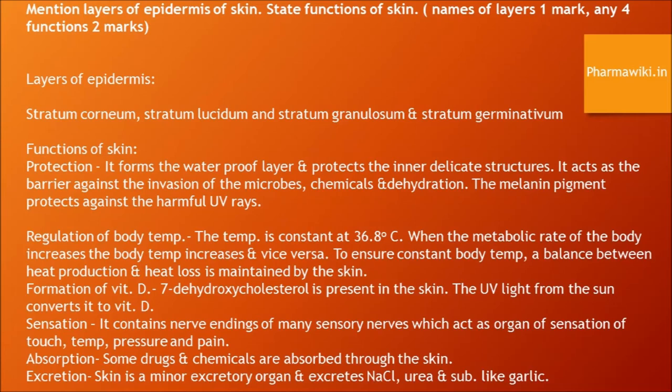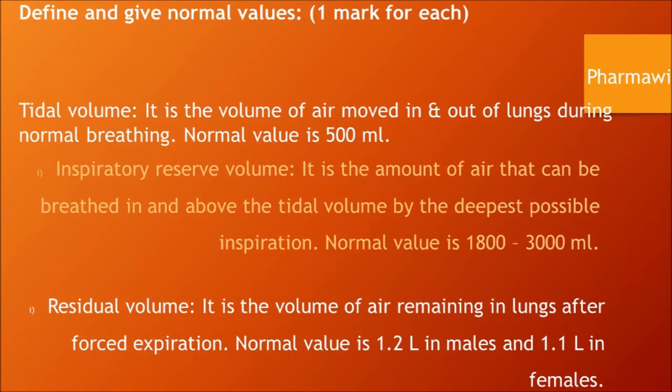Define and give normal values of lung volumes. Tidal volume: volume of air moved in and out of the lungs during normal breathing; normal value is around 500 ml. Inspiratory reserve volume: the amount of air that can be breathed in above the tidal volume by the deepest possible inspiration; normal value is 1800 to 3000 ml. Residual volume: the volume of air remaining in the lungs after forced expiration; normal value is 1.2 liters in males and 1.1 liters in females.